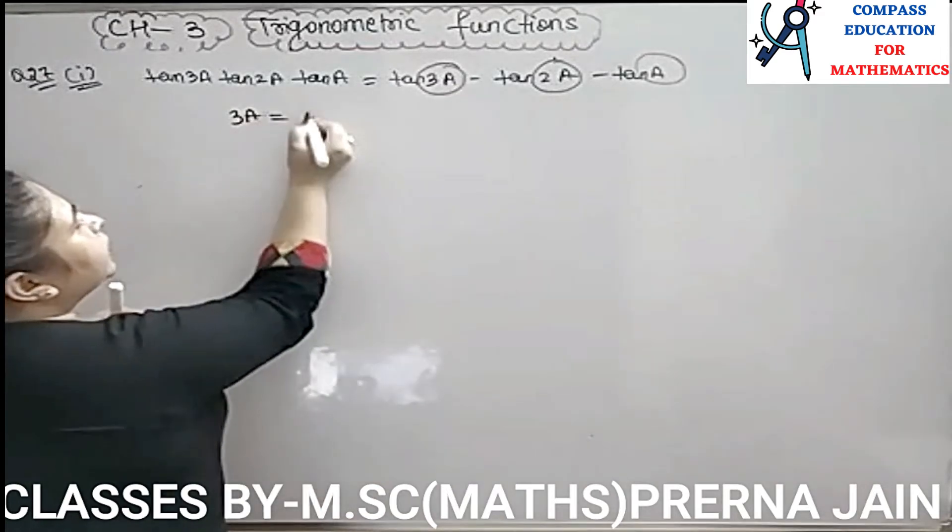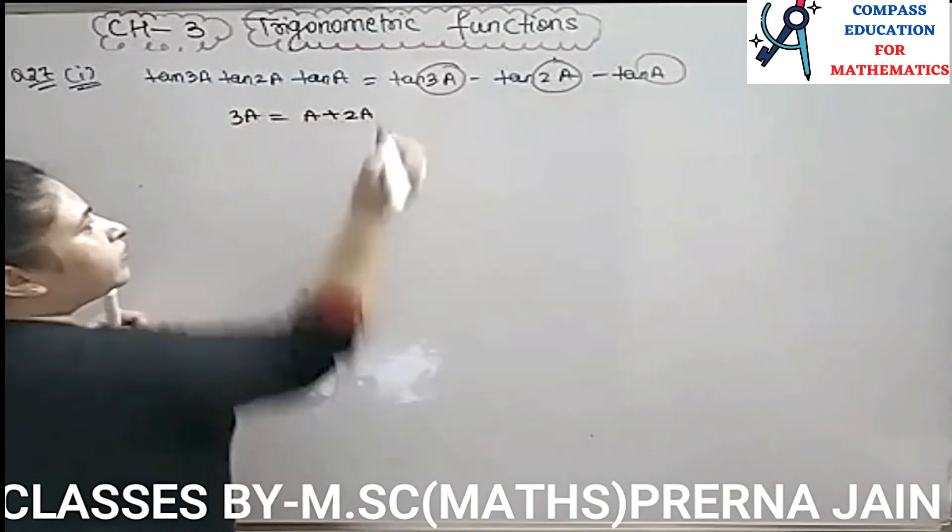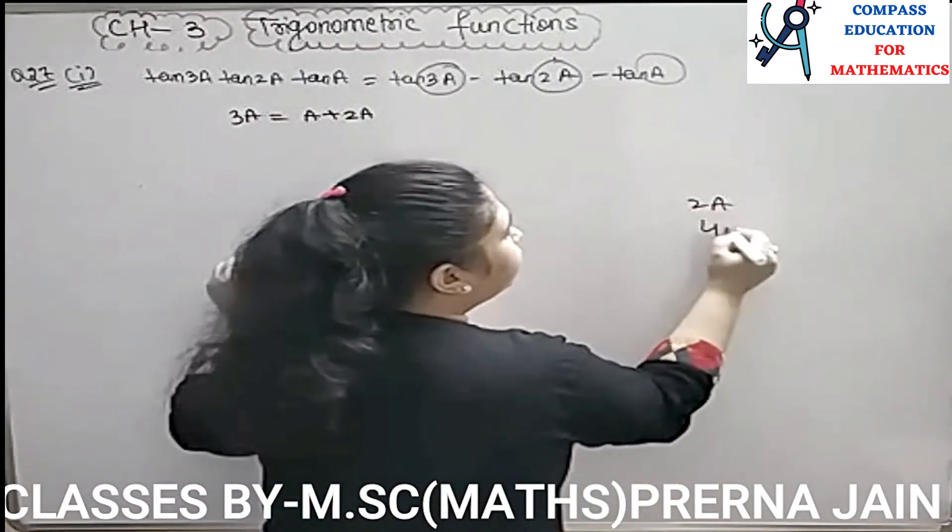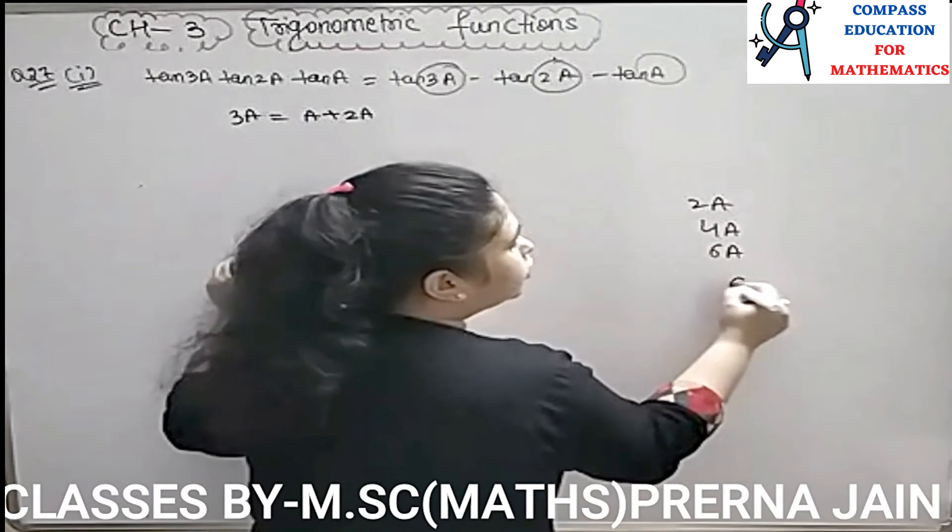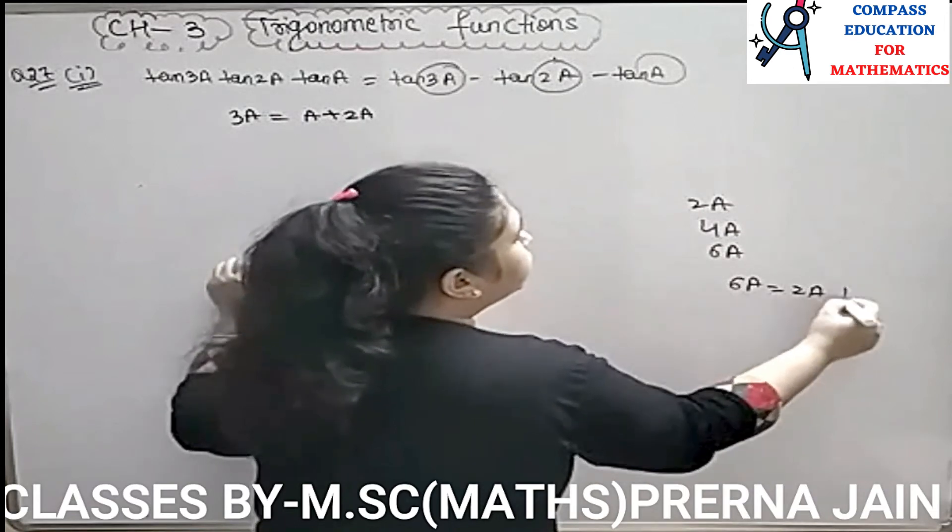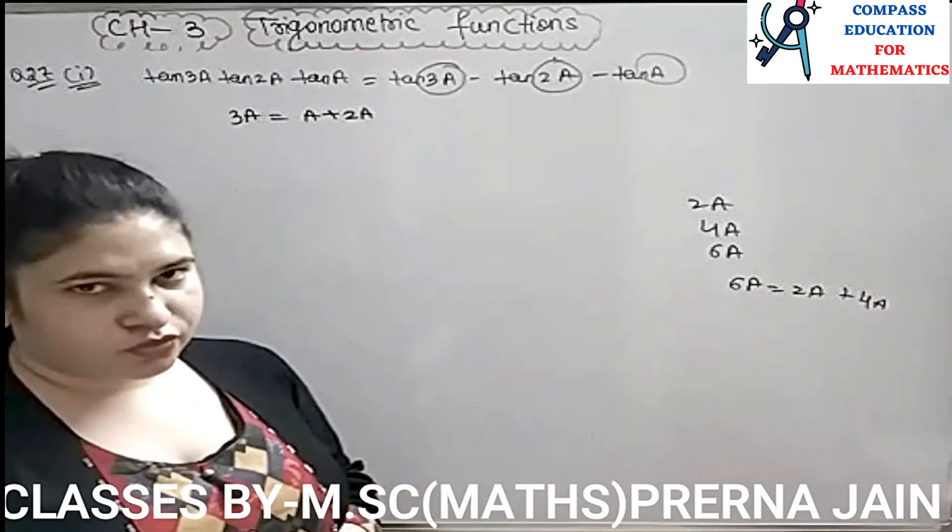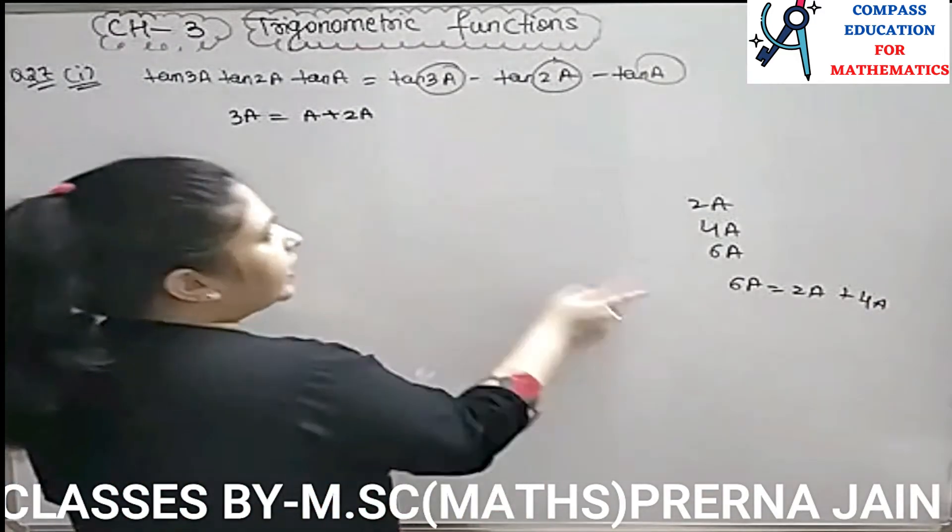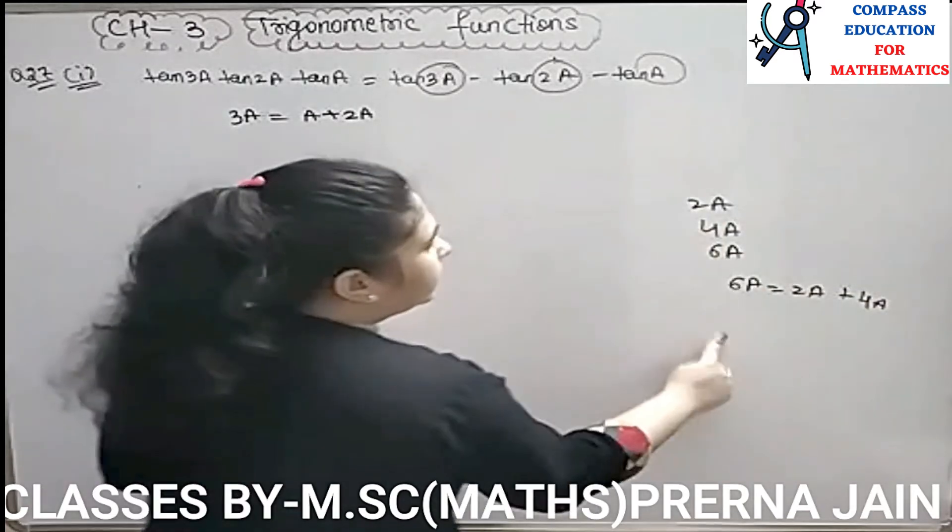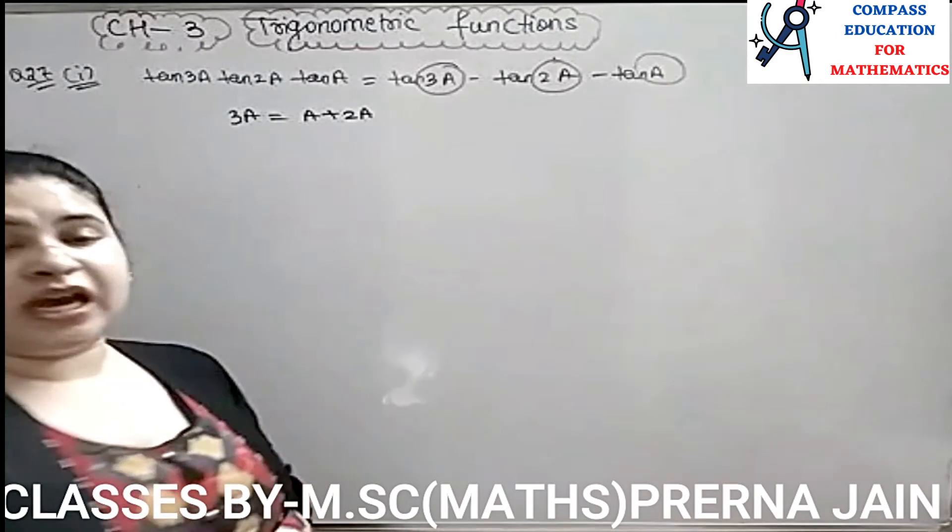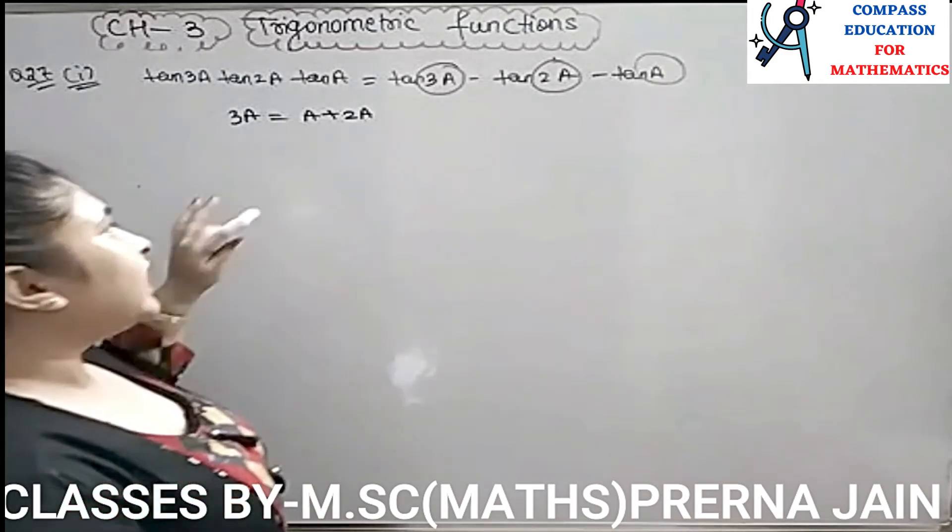How do you make patterns? Like 3A is equal to A plus 2A, do you make patterns? Suppose if my angles are 2A, 4A, 6A, do you make patterns? I am telling you that whenever there is a whole question in terms of TAN or in terms of COT and the angles are that type of pattern, if you make 1, 2, 3, then you can vary the angles. What is the way to do all these questions?